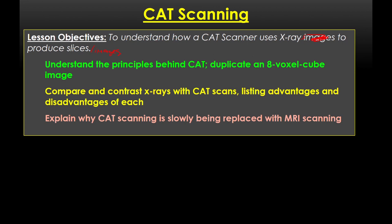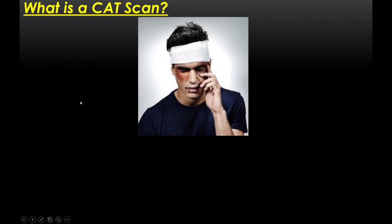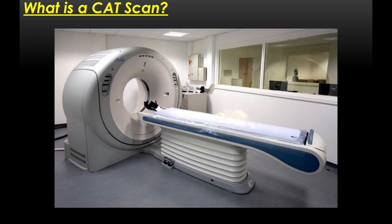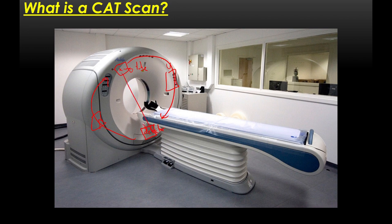Let's think about why we need CT scans in the first place. Here's a patient who's had a massive head injury — potentially damage to the brain or skull. They'll be placed inside a CT scanner, which has an X-ray tube inside. On the opposite side there is a detector. The X-ray tube and detector rotate around the patient, always on opposite sides, sending X-rays through the center of the body part being imaged.